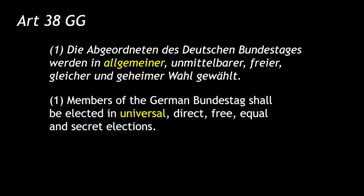According to Article 38 of the Basic Law, which is Germany's constitution, the election must have the following characteristics. It is universal, meaning that every adult citizen is eligible to vote. It is direct, meaning that there is no electoral college. It is free, meaning that all voters are allowed to make their own decisions about who to vote for. There is equal representation, meaning that all votes carry the same weight regardless of who cast them. And it is secret, meaning that it is impossible to discover how any specific individual voted.